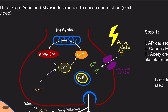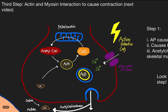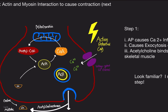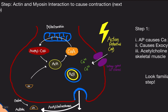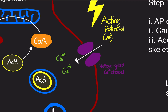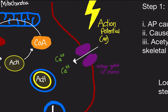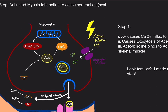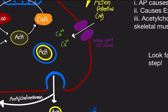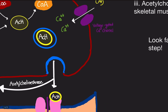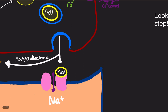So let's start with the first step. Right here is the neuron. The first thing is that the action potential arrives at the synaptic terminal. This causes voltage-gated calcium channels to open and calcium rushes in. This influx of calcium causes acetylcholine vesicles to exocytose, and acetylcholine binds to acetylcholine receptors onto the muscle.